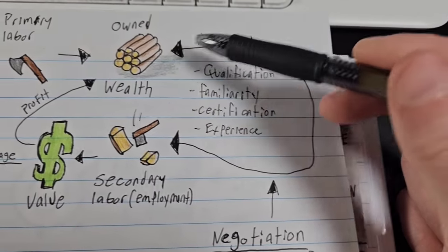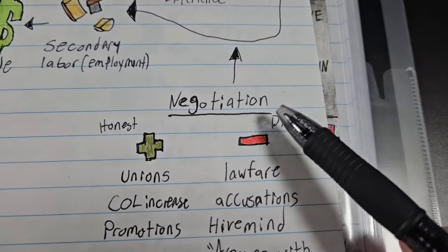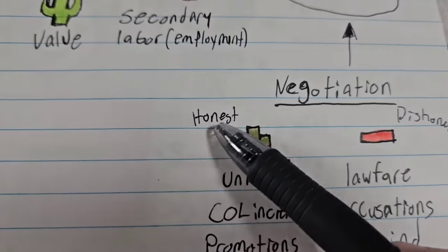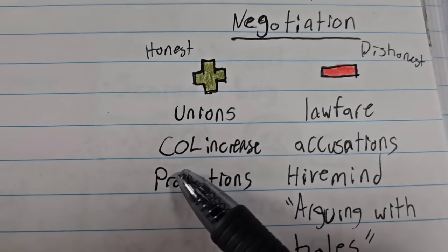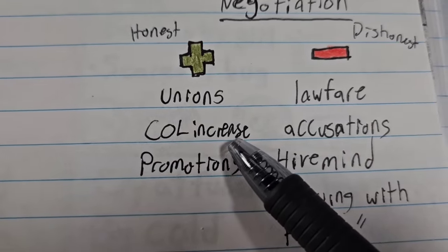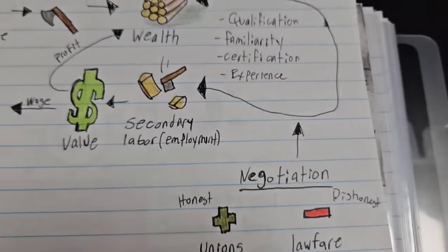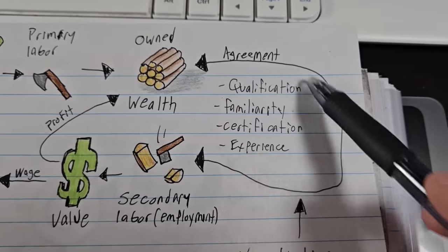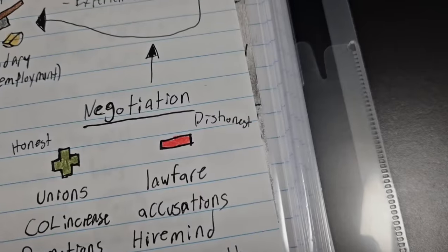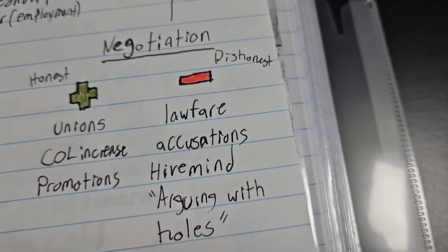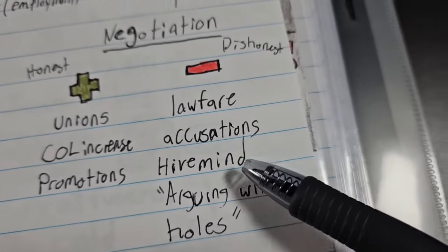Now, these agreements are sometimes unfair for the employee or the employer. So we have negotiations. Some good forms of negotiation, honest forms are unions can be helpful. Asking for cost of living increases at your job, getting a promotion because you've been working harder. These are ways of saying, I need to renegotiate this agreement to get more of the value for myself. And then there are dishonest forms of negotiation, like lawfare and making accusations, the hive mind and arguing with holes.